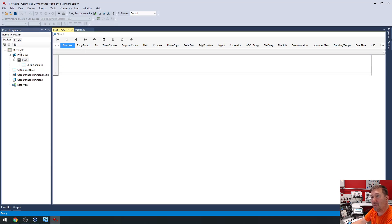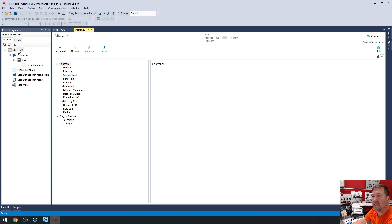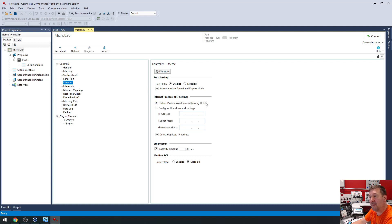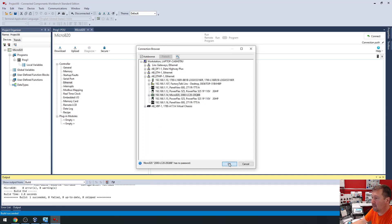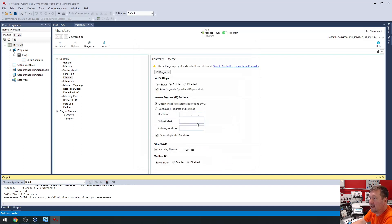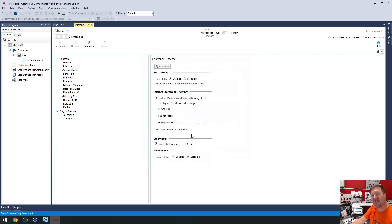But by default, a Micro 820's Ethernet configuration is going to be set to obtain IP address automatically. Now here's where it gets tricky with this. I'm going to go ahead and download this program just like it is, because this is something that even now trips me up. I'm going to navigate to my PLC, I click the OK button.